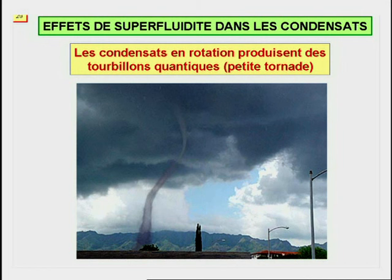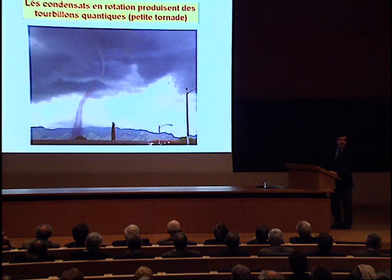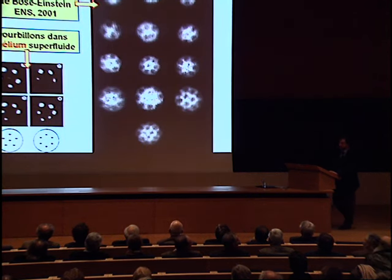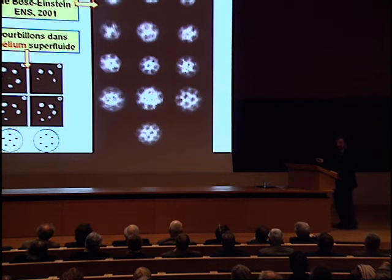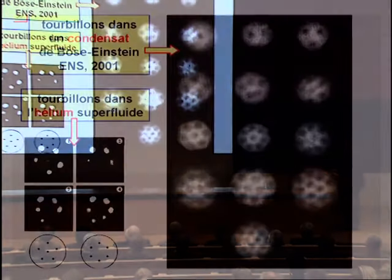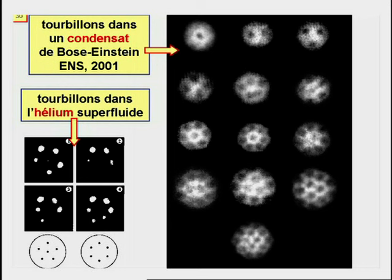Ces tourbillons sont comme des petites tornades et peuvent être produits par exemple en mettant en rotation des pièges confinants. Dans cette image prise à l'École Normale Supérieure ici à Paris, on voit qu'on est capable de bien maîtriser la production des tourbillons. Ici on compte jusqu'à 13 tourbillons. Par comparaison, on voit les tourbillons quantiques obtenus dans l'hélium superfluide dans l'expérience fameuse de Packard en 1972.